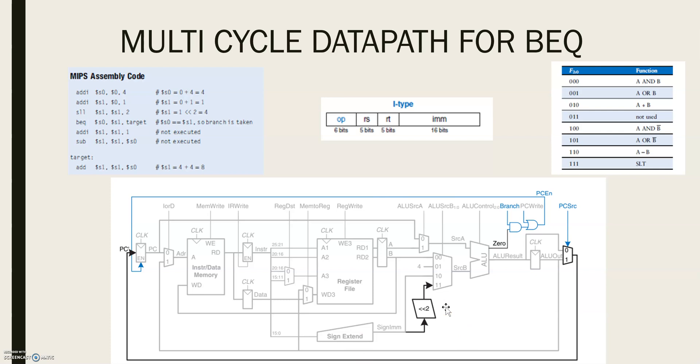In the case of a single-cycle processor, yet another adder was needed to compute the branch address. However, in the case of a multi-cycle processor, ALU can be reused again to save hardware. On one step, ALU computes the value of PC plus 4 and writes it back to the program counter.